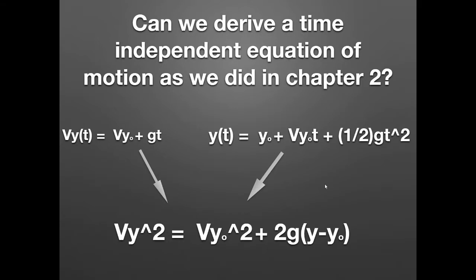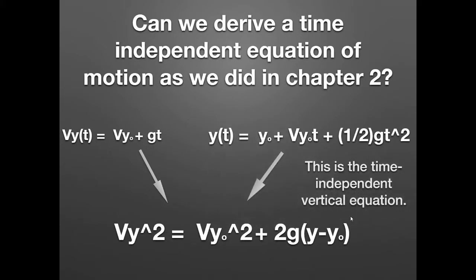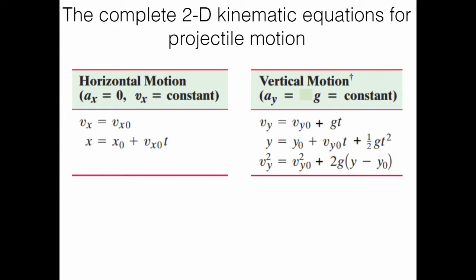Doing that substitution, we achieve: vy² = vy₀² + 2g·(y − y₀). This is very similar to the time-independent equation for one-dimensional kinematics — just notice the subscripts: v subscript y, v subscript y-naught. We're dealing specifically with vertical motion; this does not apply to horizontal motion. This is called the time-independent vertical equation.